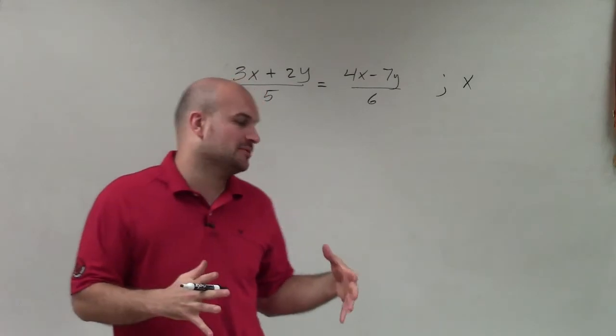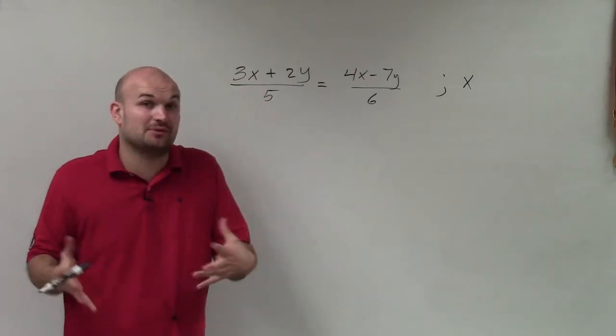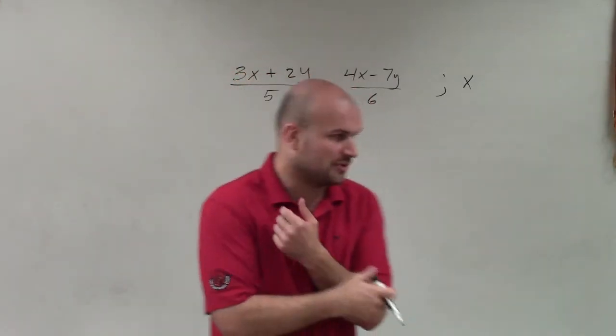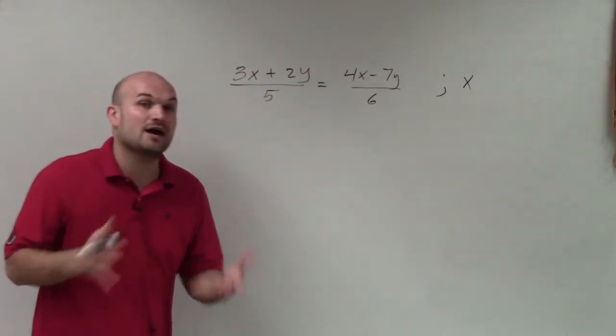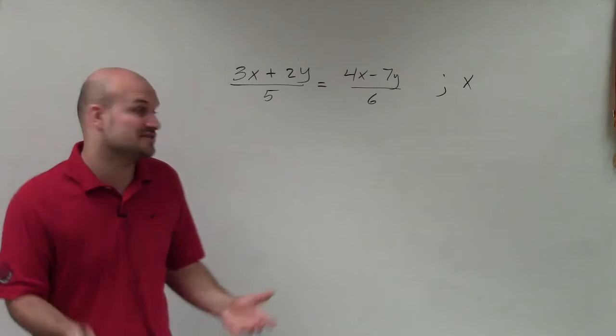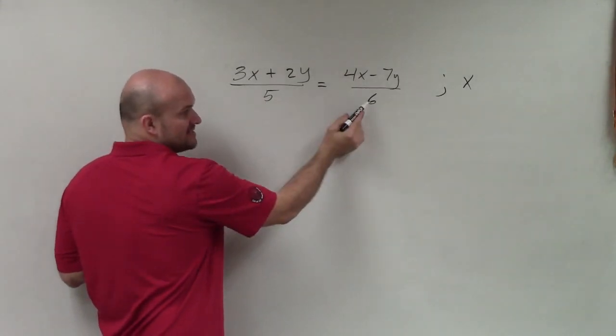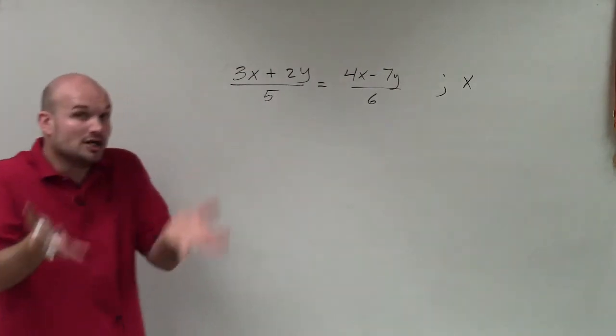To isolate the variable, we need to get the variable on the same side and undo all the processes happening to it. Whenever I see fractions, I always want to undo that process first. You can see that here, this x is being divided by 5, and here, this x is being divided by 6. So I want to undo that.